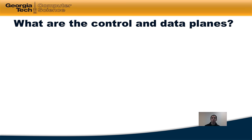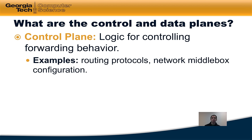So first, what are the control and data planes? The control plane is logic that controls the forwarding behavior in the network. Examples of the control plane are routing protocols, network middlebox configuration such as firewall configuration or load balancer configuration, and so forth. One can think of it in some ways as the brain of the network.